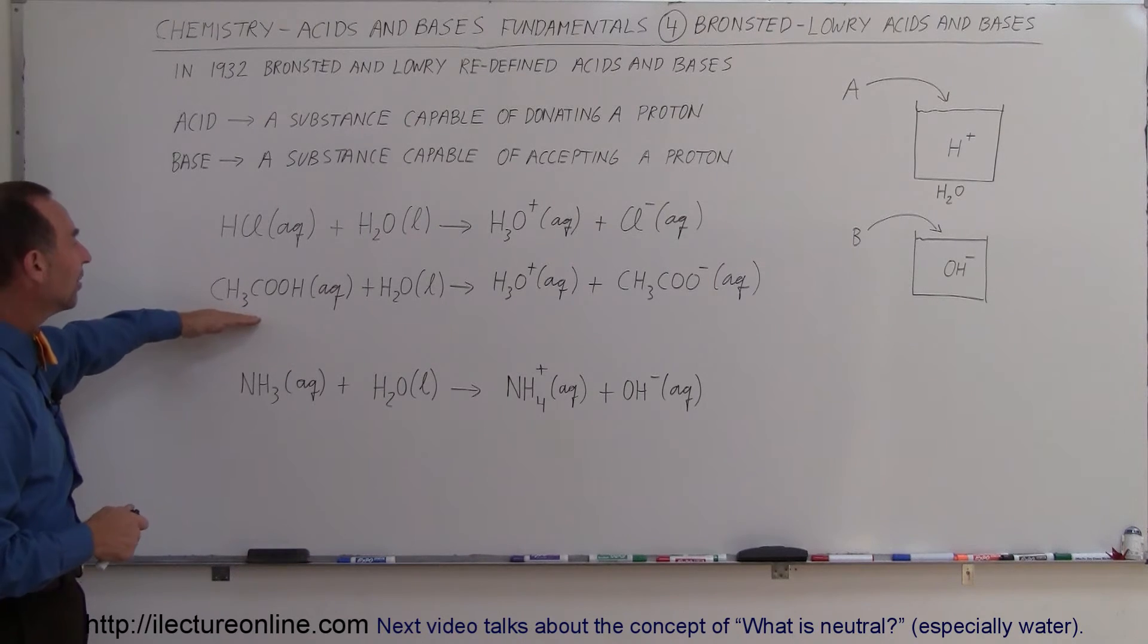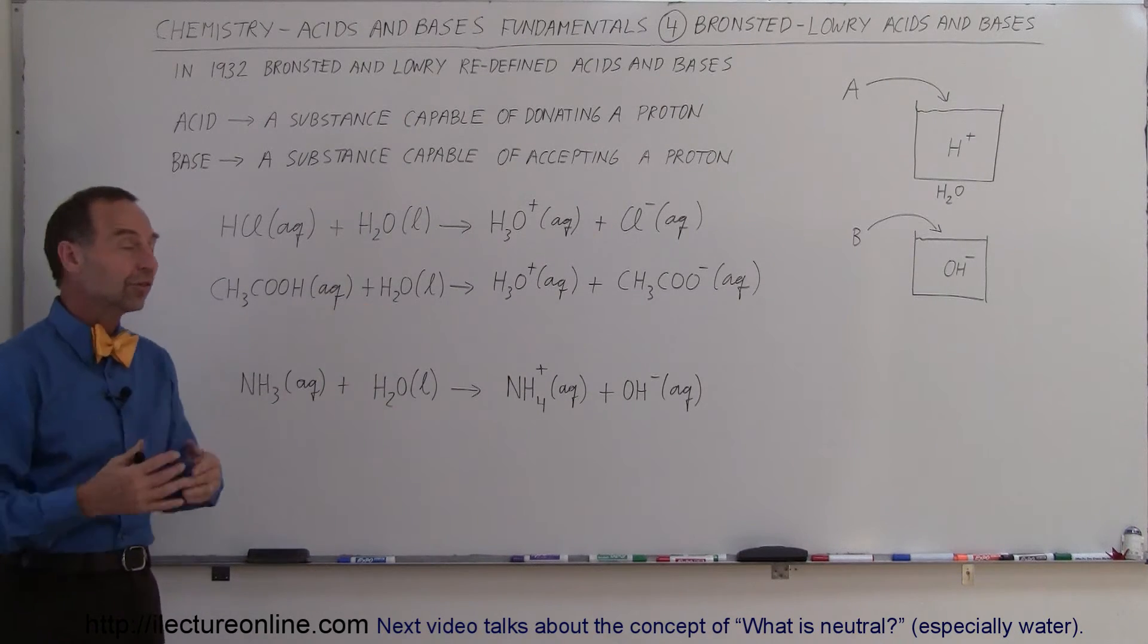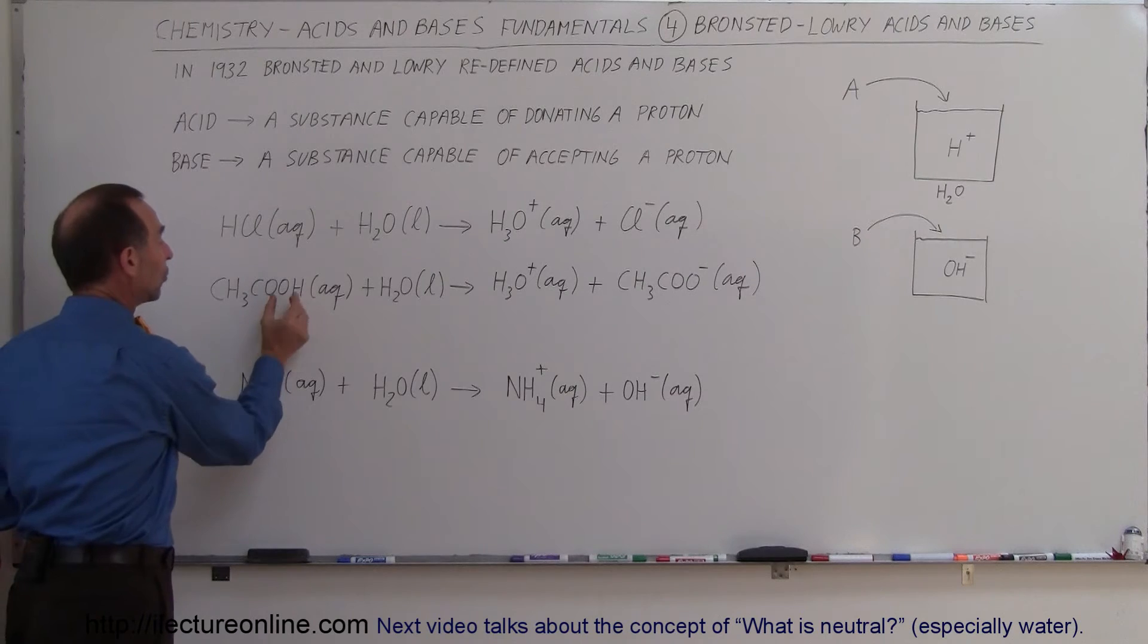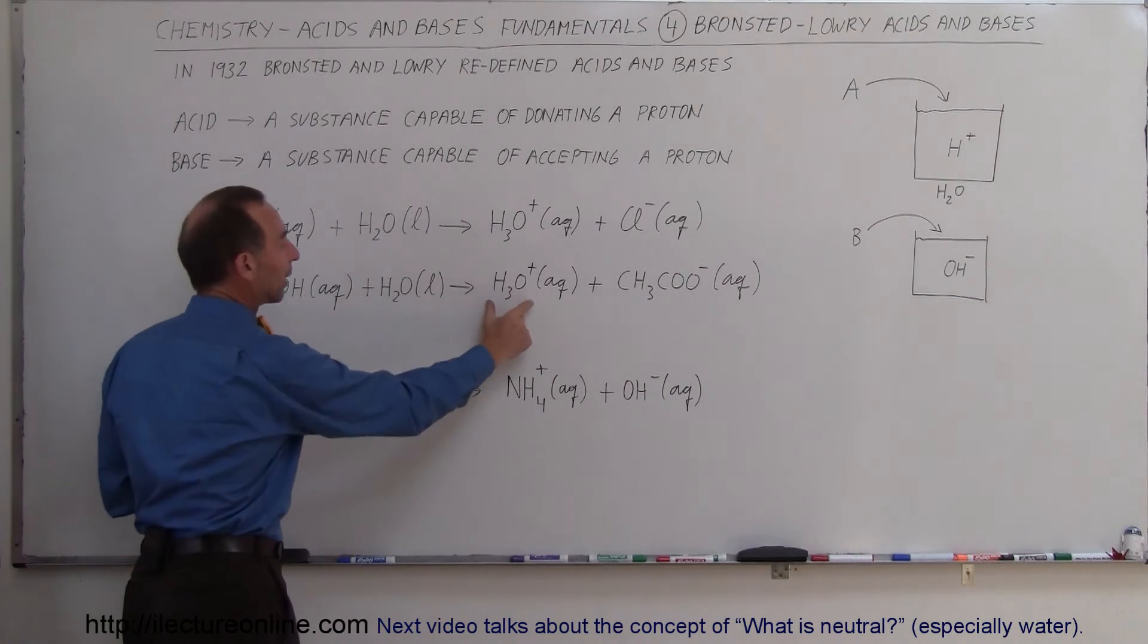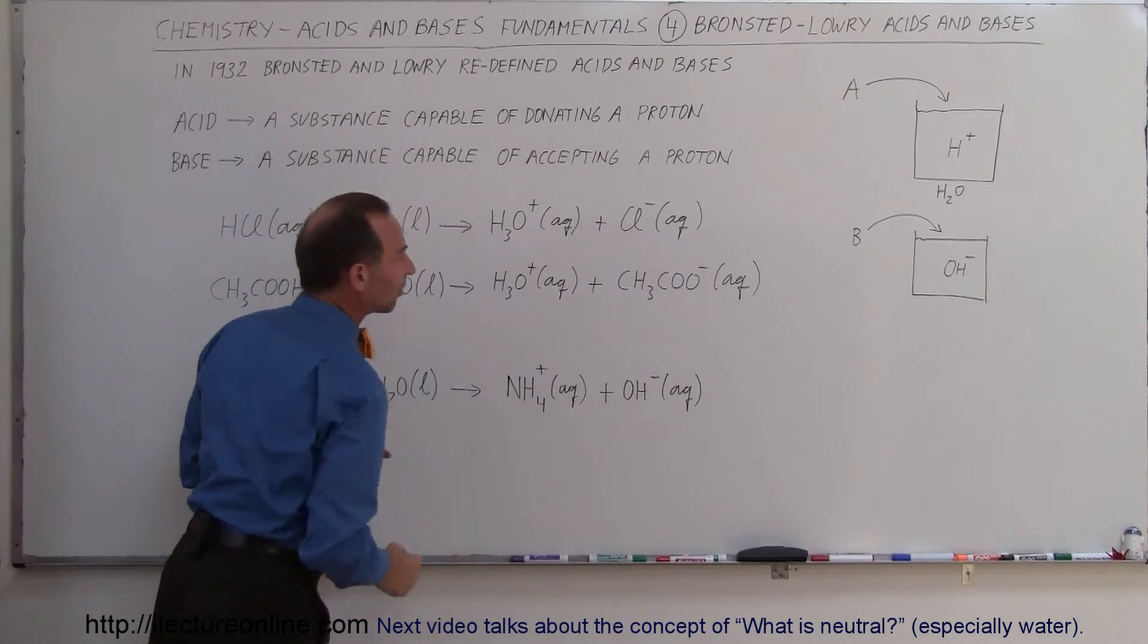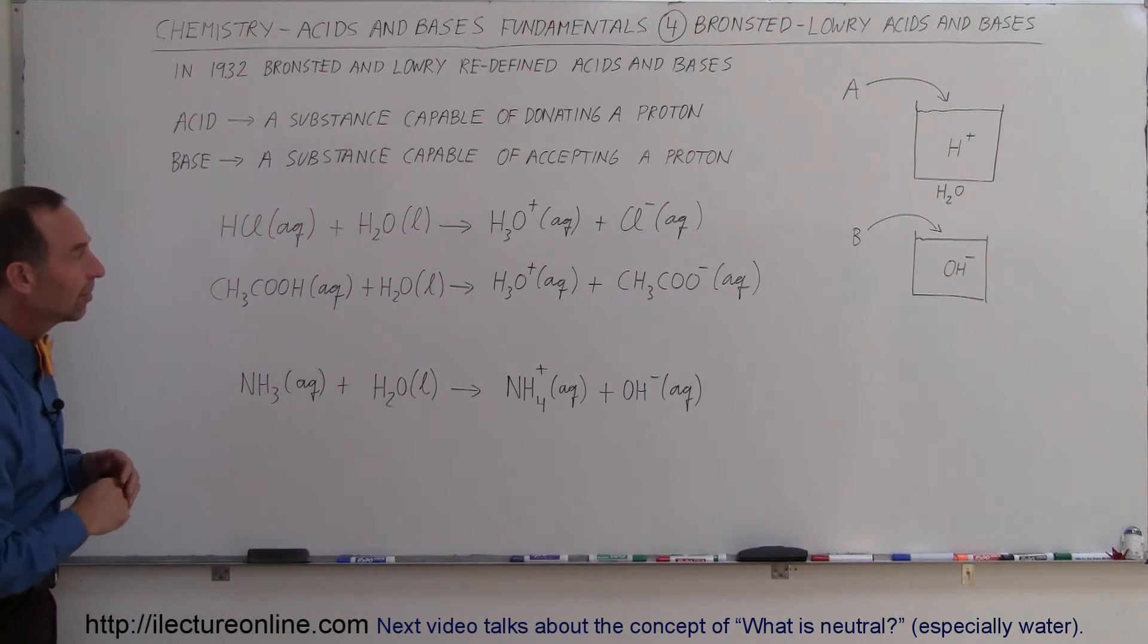So let's say we have acetic acid and water. What does the acetic acid do? It takes one of its hydrogen ions and donates it to the water to make hydronium ions H3O+, and then gives us the acetate ion CH3COO-.